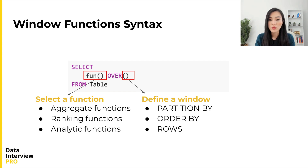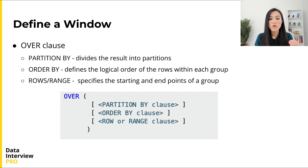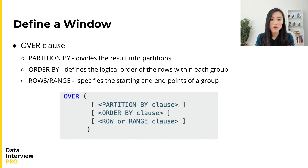It may sound simple, but we only need to consider two things when writing a window function. The first part is to define a window or group — we need to specify a window frame, which is written after the OVER clause inside the parentheses. The second part is to select a function, which is written in front of the OVER clause. When we use window functions in a query, they are applied in the SELECT clause together with selecting other columns. Next we'll look at each part in detail, starting with how to define a window.